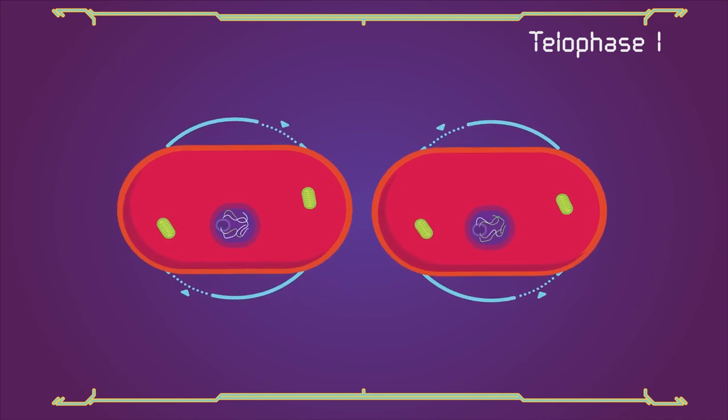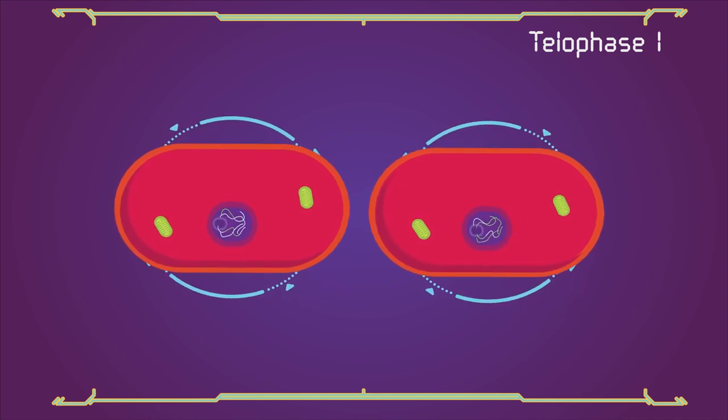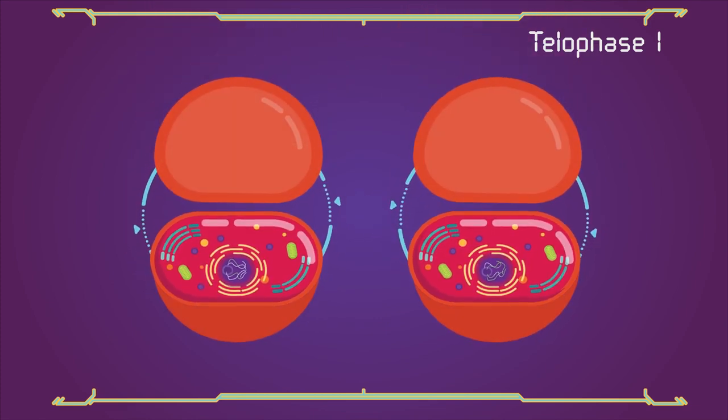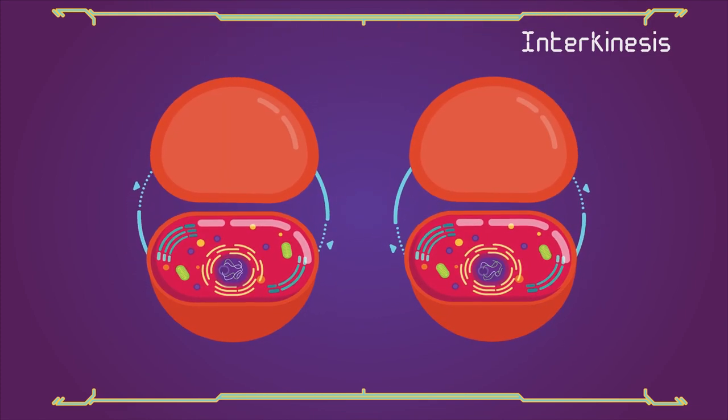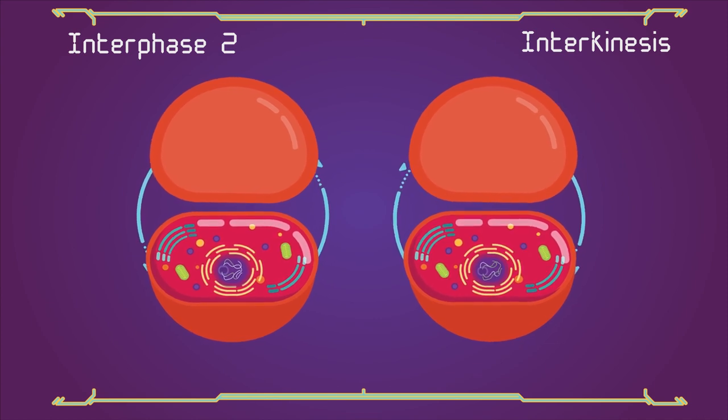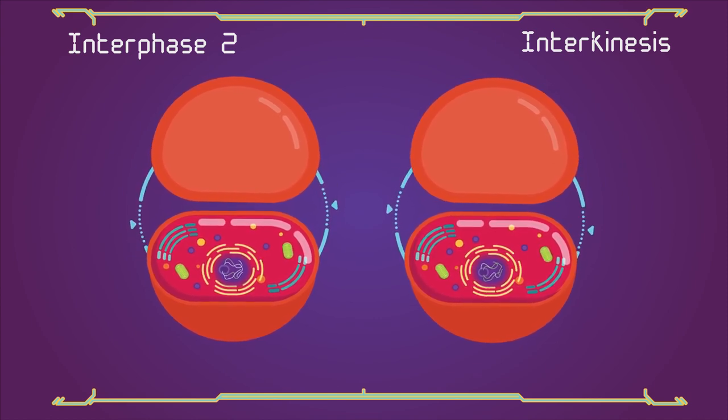Sister chromatids remain attached during telophase 1. Cells may enter a period of rest known as interkinesis, or interphase 2. No DNA replication occurs during this stage.